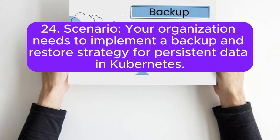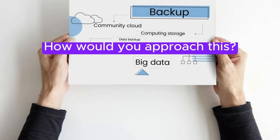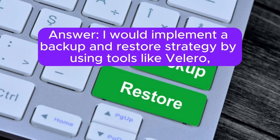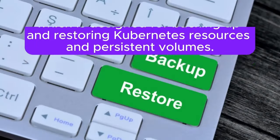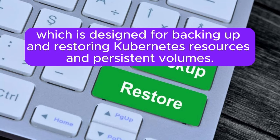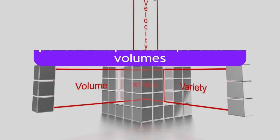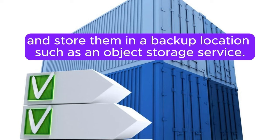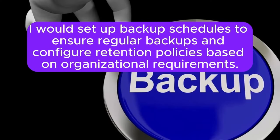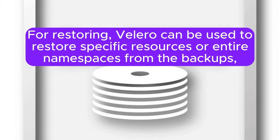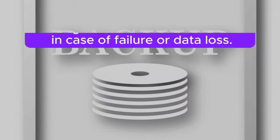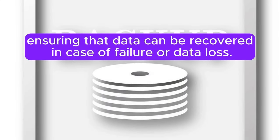Scenario 24: Your organization needs to implement a backup and restore strategy for persistent data in Kubernetes. How would you approach this? Answer: I would implement a backup and restore strategy using tools like Velero, which is designed for backing up and restoring Kubernetes resources and persistent volumes. Velero can be configured to take periodic snapshots of persistent volumes and store them in a backup location such as an object storage service. I would set up backup schedules to ensure regular backups and configure retention policies based on organizational requirements. For restoring, Velero can be used to restore specific resources or entire namespaces from backups.